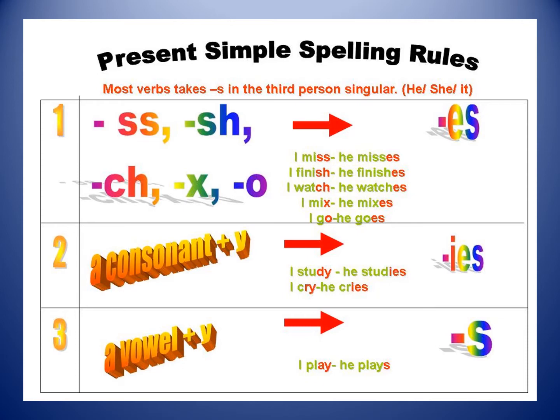The second problem: when the verb ends with Y and before the Y there is a consonant. For example: I study — but if I have he, she, or it, I must add S. I cannot just put S — I will cross out the Y and put -IES: he studies. Second example: I cry — before the Y there is a consonant R, so I cross the Y and put -IES: he cries.